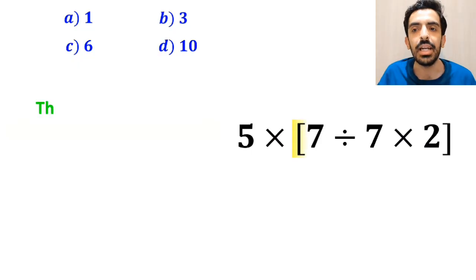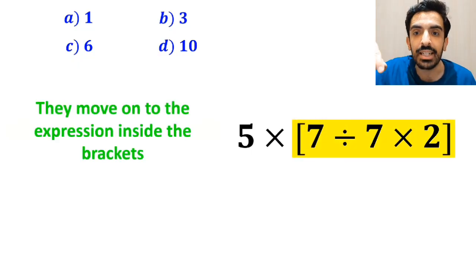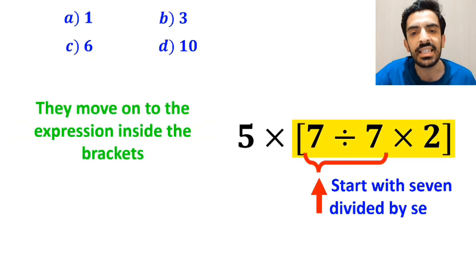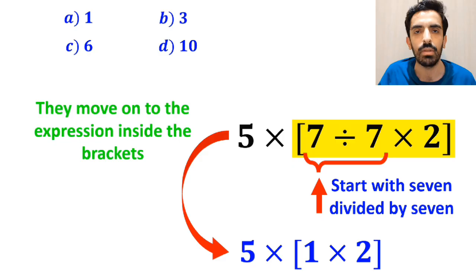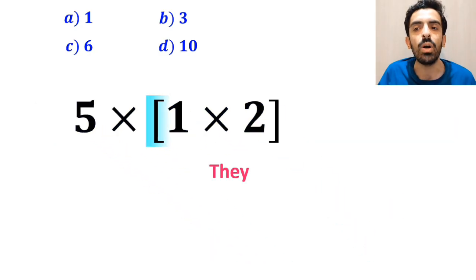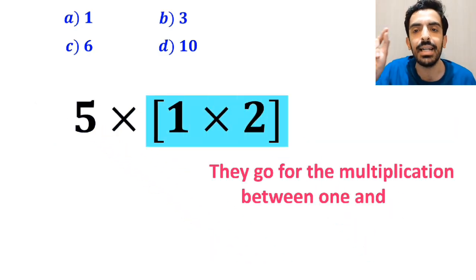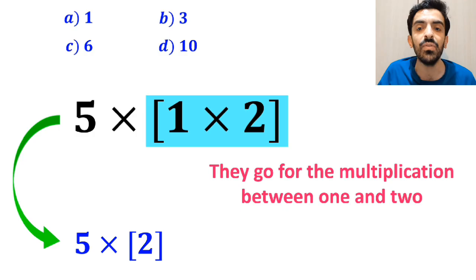And the next step, they move on to the expression inside the brackets and start with 7 divided by 7. So this expression simplifies to 5 multiplied by 1 times 2 inside the brackets. And the final step, they go for the multiplication between 1 and 2 and replace this expression with 5 times 2.